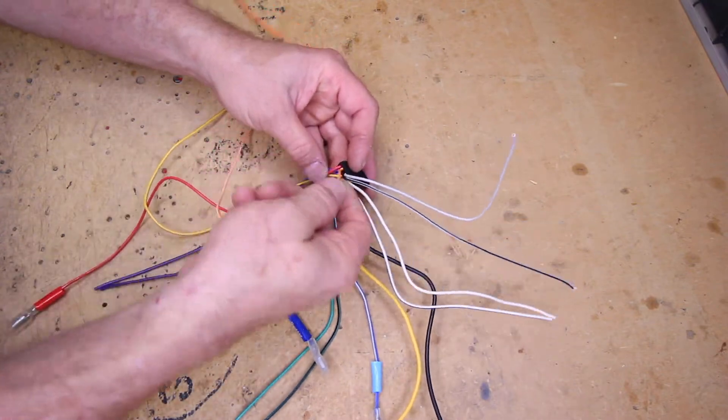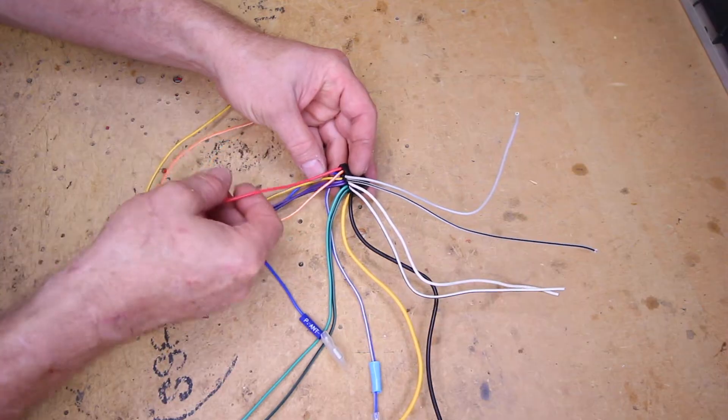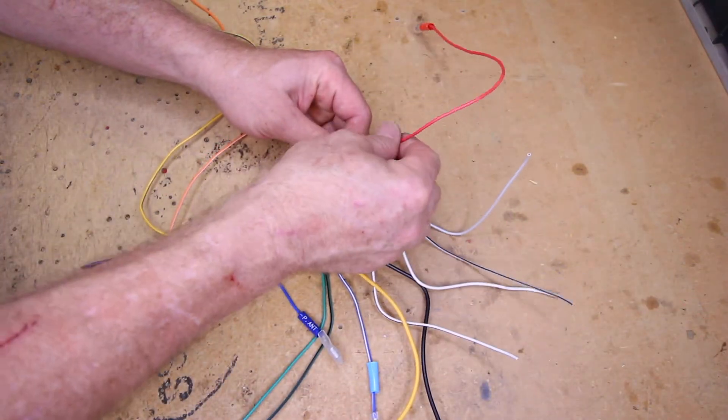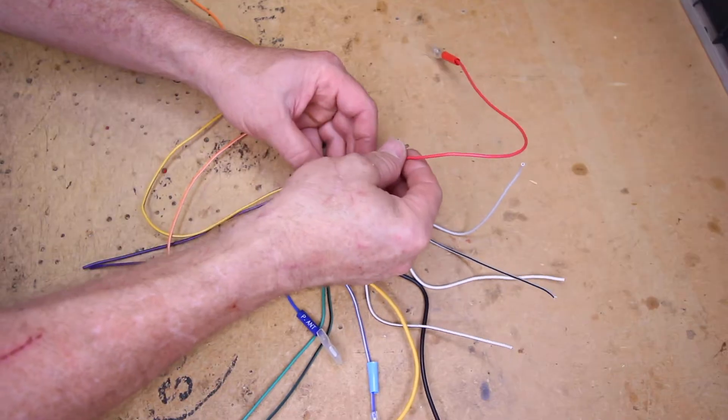Now, then you have orange white, which we'll skip over for a second, and then you have red. Red is going to be accessory. This is what you want to have power when the key is in the ignition and turned on.